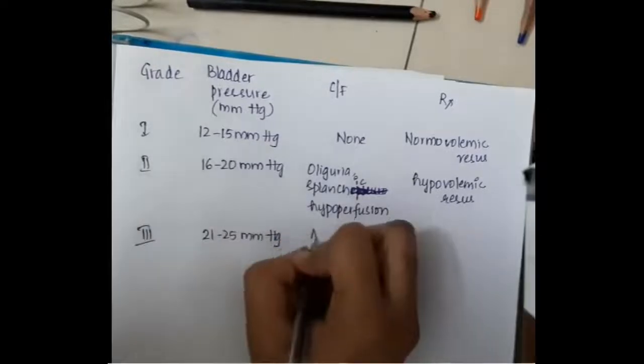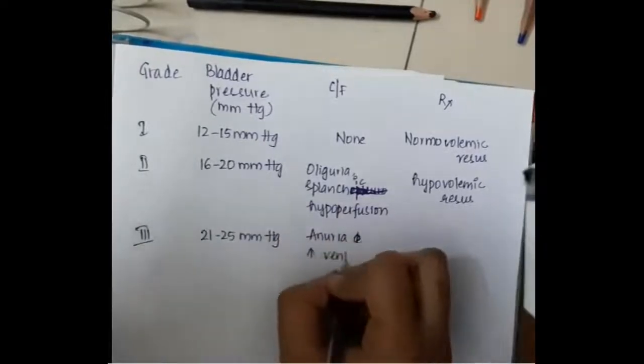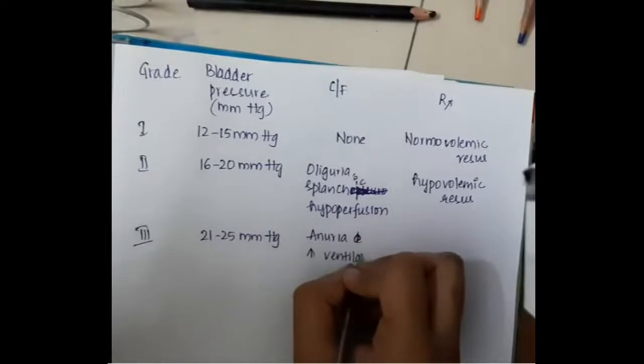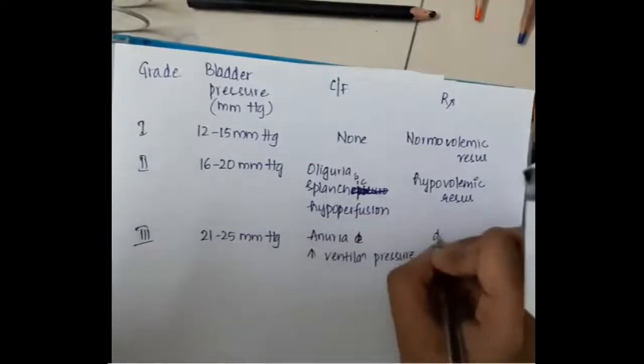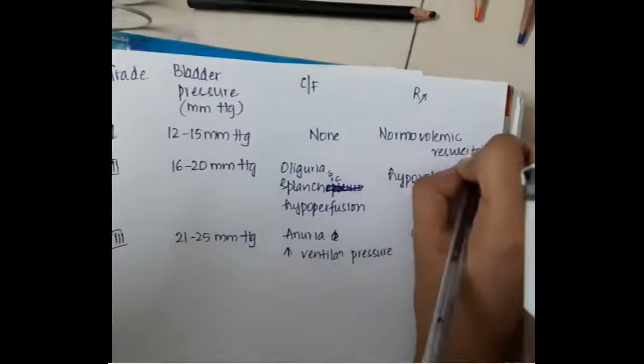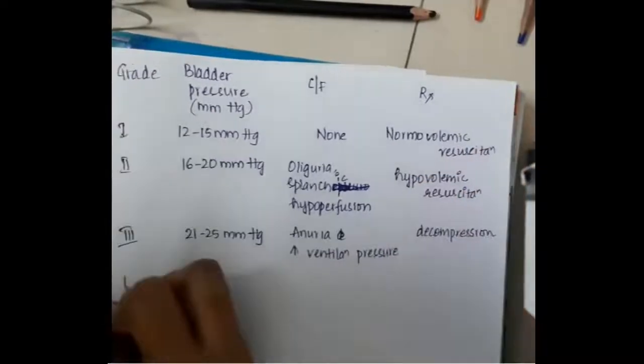In stage 3, the bladder pressure will be 21 to 25 millimeters of mercury. The patient suffers from anuria and increased ventilation pressure and finally, treatment is decompression.